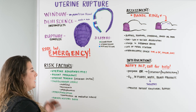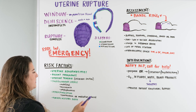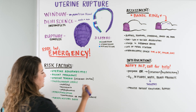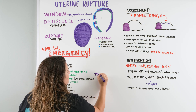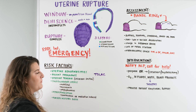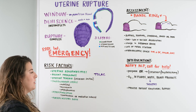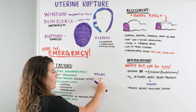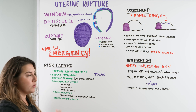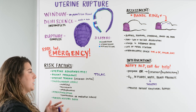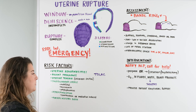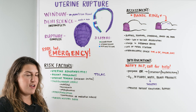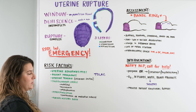Uterine trauma is also a risk factor, which connects to recent pregnancy and prior cesarean section. There's a term called TOLAC — Trial of Labor After Cesarean — where they're going to trial a labor, meaning they'll try to push baby out vaginally. It doesn't necessarily mean you can't have a vaginal delivery after a cesarean, but it is a risk factor if mom wants to try vaginal delivery after a cesarean history.